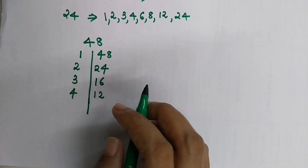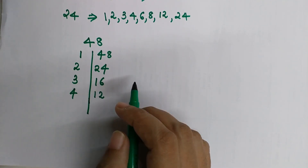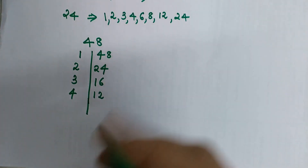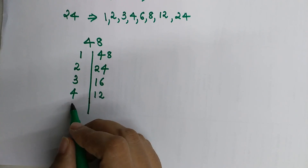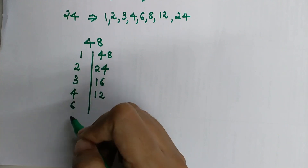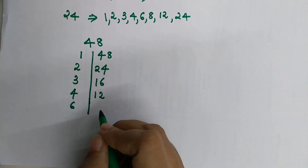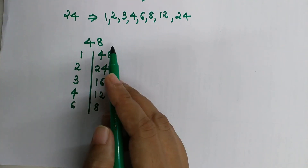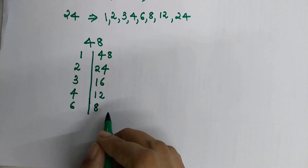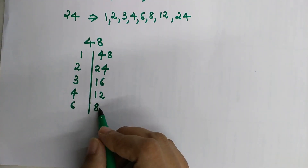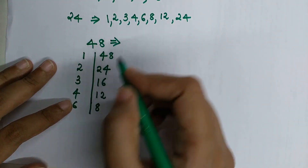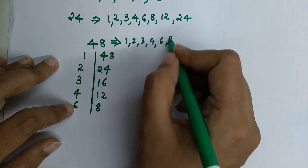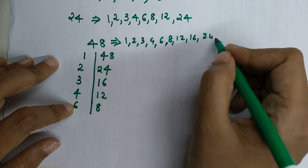I've already made a video on divisibility tests — check the link in the description. For 6: since 48 is divisible by both 2 and 3, we write 6 directly. 6 eights are 48, so the pair is 6 and 8. For 7: 7 sevens are 49, so 48 is not divisible by 7. The next number is 8, which is already on our list. So the factors of 48 are 1, 2, 3, 4, 6, 8, 12, 16, 24, and 48.